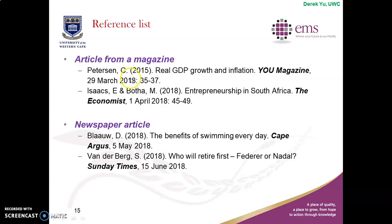Now we move on to articles from a magazine, starting with the case where you know who the author is. The first example: surname Peterson, initial C, 2015 — the title of the article is 'Real GDP Growth and Inflation,' from the News magazine, issue 29th of March 2018, colon, then the page numbers — three pages.